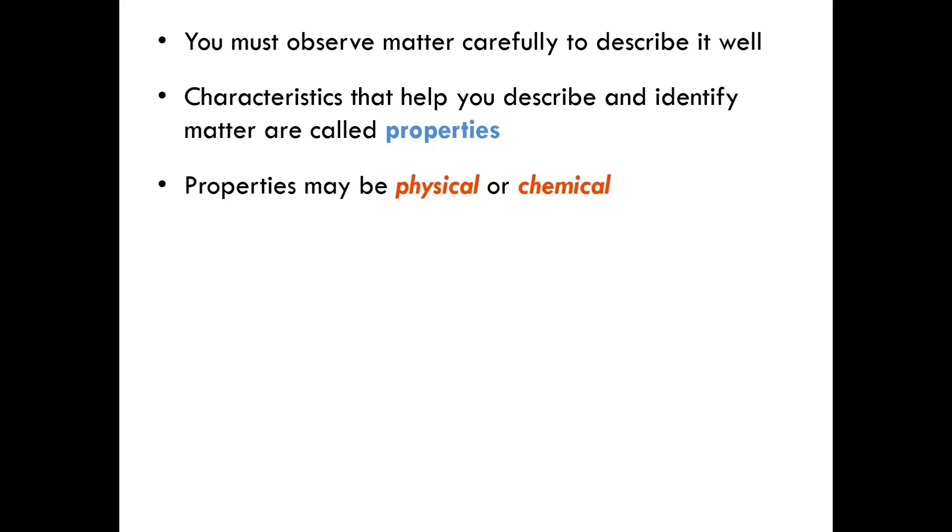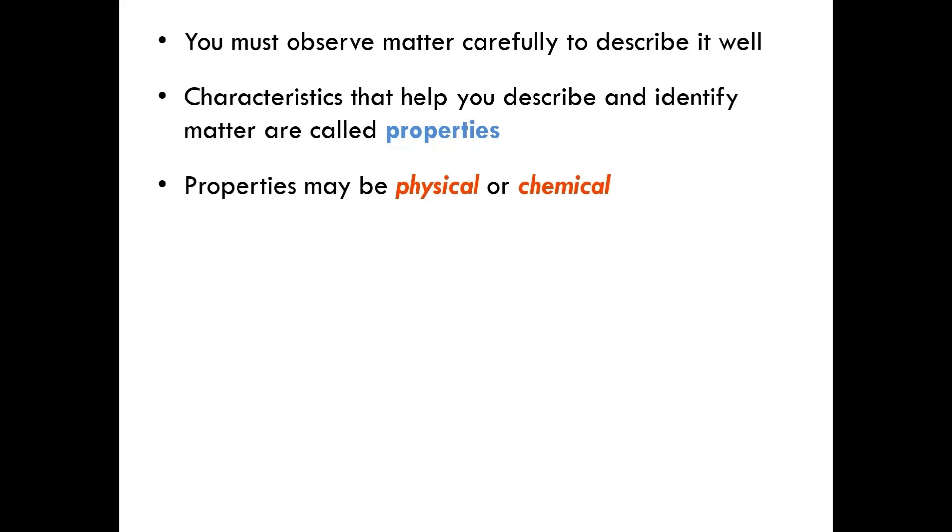Properties can be physical or chemical in nature. A physical property is a property that can be observed or measured without changing the composition of matter. Examples of physical properties may be the physical state of matter, whether it be a gas, liquid, or solid, or the color of the material, or if the material has an odor.